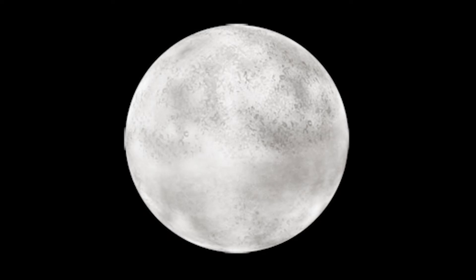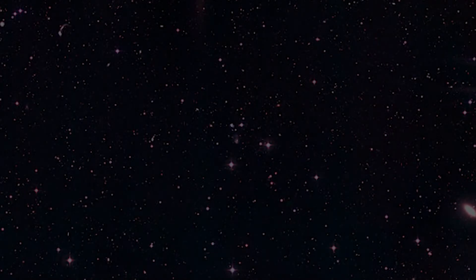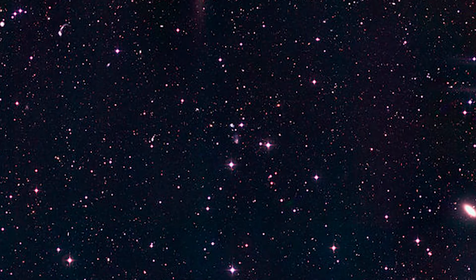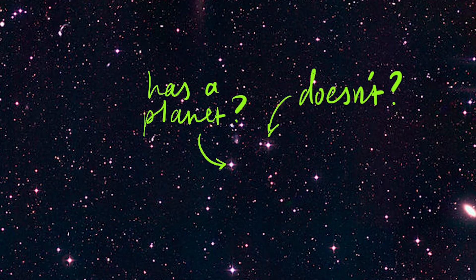The biggest problem with detecting exoplanets is that planets are, on the scale of space, small and dark. They're pretty impossible to see from Earth with the technology we currently have. What we can see are the stars they orbit. So if we can distinguish a star with a planet from a star without, we can find exoplanets. But how do we do that?